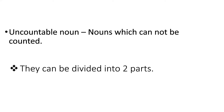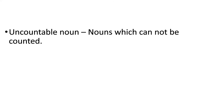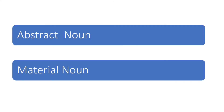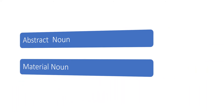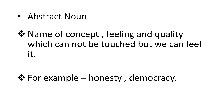They can be divided into two parts: abstract noun and material noun. Abstract noun: the name of a concept, feeling, or quality which cannot be touched but we can feel it is called an abstract noun. For example, honesty, democracy, etc.